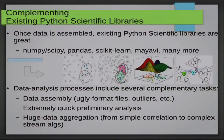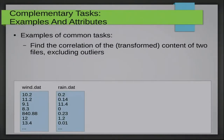We might not want to load all of the data into memory at all — such as when we just want to aggregate it, finding correlation, sum, or median. There's no real reason to load the data into memory if we just want to summarize it. I'd like to give some examples of these complementary tasks not covered by those excellent libraries, and in my experience these tasks are fairly common.